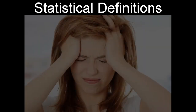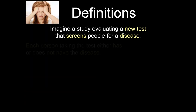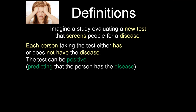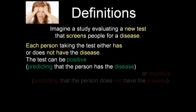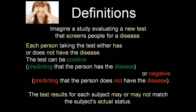We do have to talk about some statistical definitions very briefly. Imagine a study evaluating a new test that screens people for a disease. Each person taking the test either has the disease or does not have the disease. The test can be positive — predicting that the patient has the disease — or negative, predicting that the patient does not have the disease. The test results for each subject may or may not match the subject's actual status.